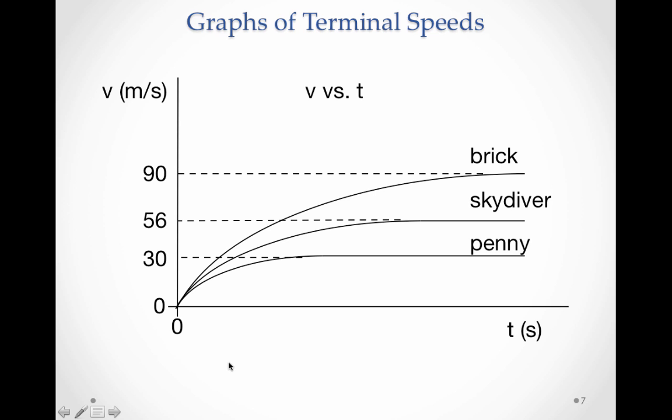Let's take one more look at some graphs of terminal speed and relative terminal speeds. Remember that as an object falls, it's going to get faster and faster like our penny, but then when the drag force becomes equal to the pull of gravity and the acceleration goes to zero, the penny will reach a constant speed, and that would be its terminal speed.